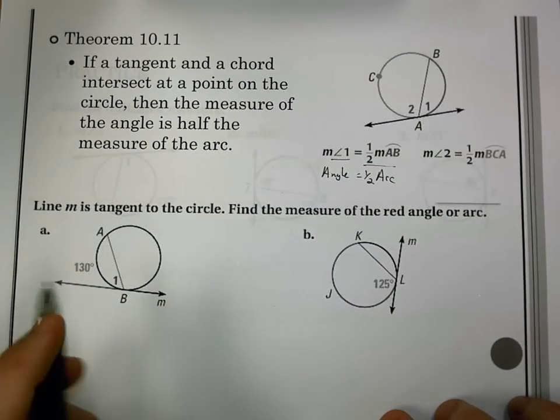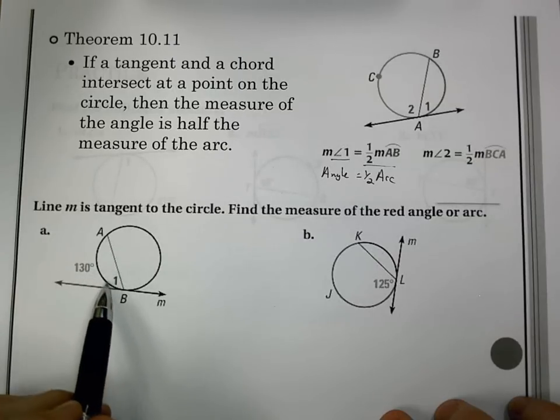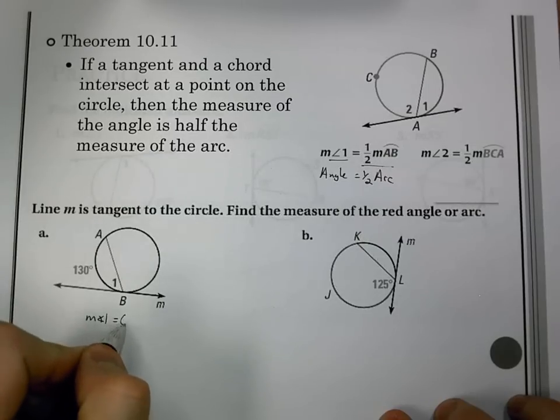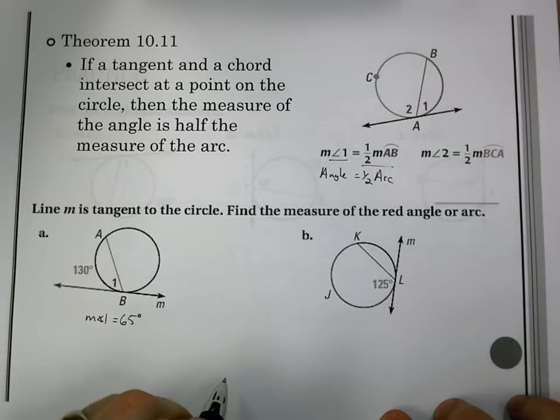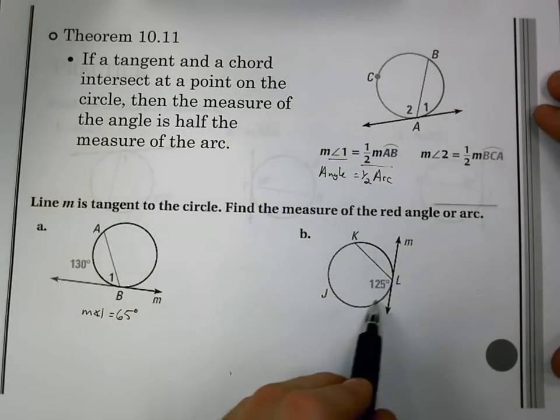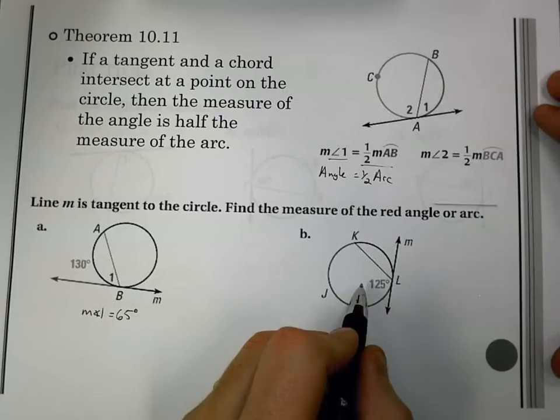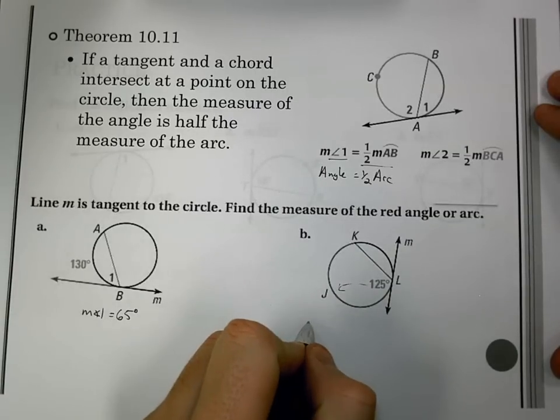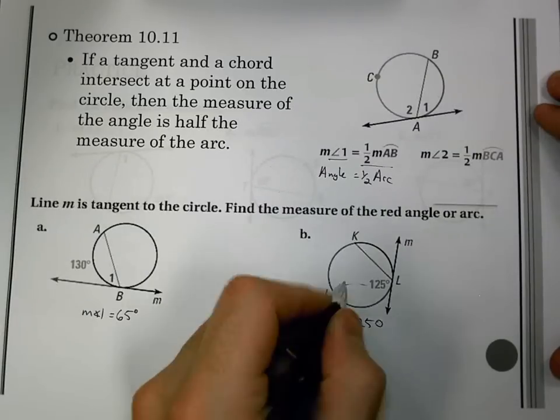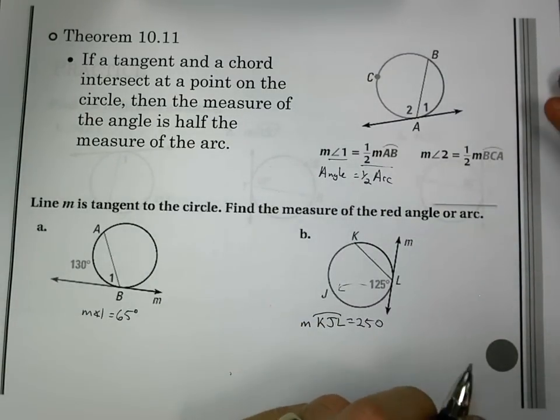If we look at some examples, I have the arc is 130. I need the angle. Well, I take half of it, so I get the measure of angle 1 is 65 degrees. For B, I'm looking for now the arc JKL. I need to double it now, and I get that the measure of arc KJL is 250 degrees. Now, those are pretty easy.